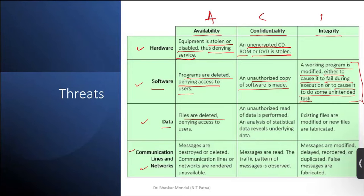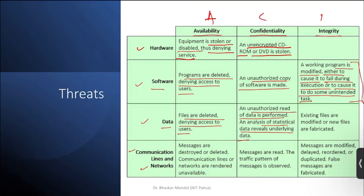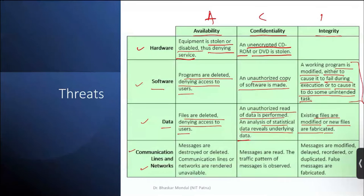Data being deleted denies access to users, harming availability. Unauthorized reading of data loses confidentiality. Statistical analysis of data can reveal underlying data — by doing statistical analysis of ciphertext in weak cryptographic techniques, you can get back the original text. Existing files being modified or new files being fabricated hampers data integrity.